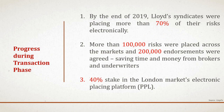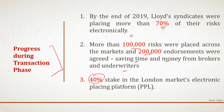Some recent updates: during the transition phase they highlighted that by the end of 2019, Lloyd's syndicates were placing more than 70% of their risks electronically — good news for the complex risk platform. More than 100,000 risks were placed across the market and 200,000 endorsements were agreed, helping to save time and money for brokers and underwriters specifically. Lloyd's Corporation also bought a 40% stake in PPL to better control it and expedite the entire complex risk platform.